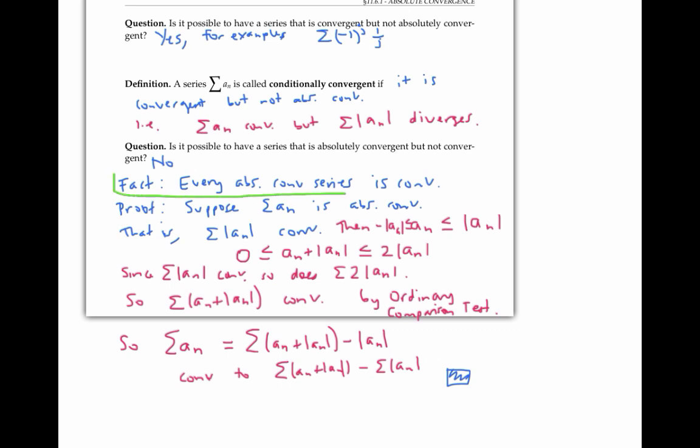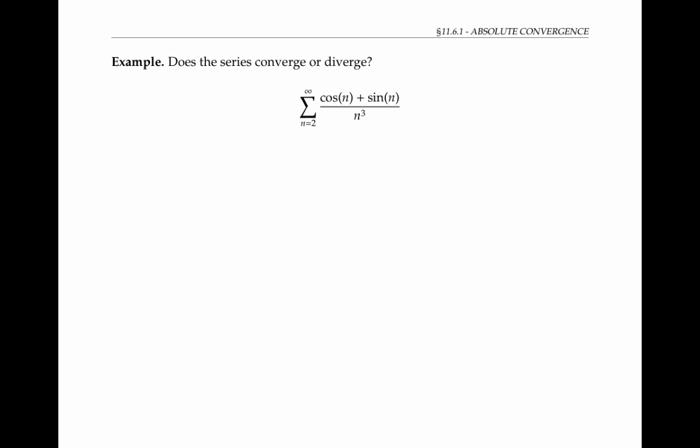The fact that absolute convergence implies convergence can come in handy when trying to prove that a series converges, as in the following example. We want to determine whether the series with cosine and sine in the numerator is convergent or divergent, but the cosine and sine make things a little bit tricky. The intuition is that this series should converge, since cosine and sine are bounded, so it should essentially behave like the sum of one over n cubed, which converges by the p-test. But we can't just use the ordinary comparison test here, because our terms are not always positive — sine and cosine can be positive and negative, and so can their sum.